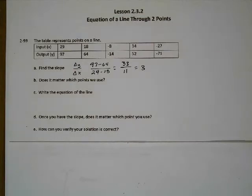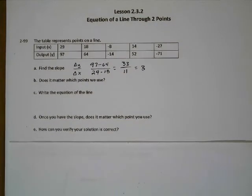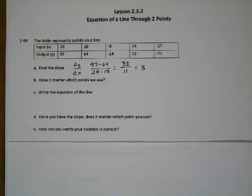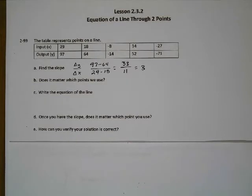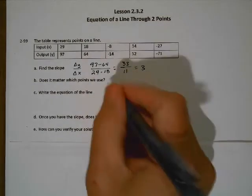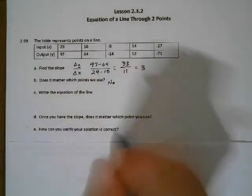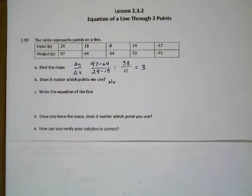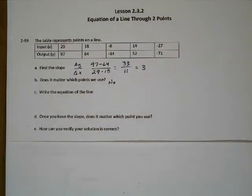Now, does it matter which points I use? I used the first two points, but since all of these are points on the same line, if you pick any two points they're going to give you the same slope. So does it matter which points we use? No, not at all. You could have used any two points on that line and would have gotten the same slope of 3. If you don't believe me, go back, check your work, and pick any two points you want.